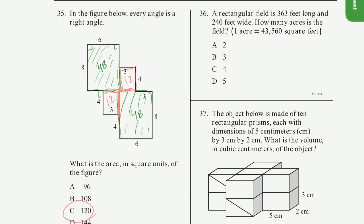Problem 36. A rectangular field is 363 feet long and 240 feet wide. How many acres is the field? So let me draw this field in green. So it is 363 feet long and 240 feet wide. If we wanted to do it in square feet, we would multiply these two numbers.